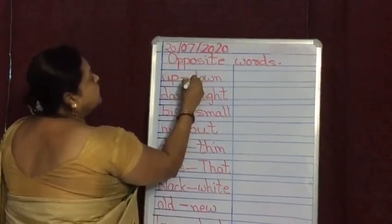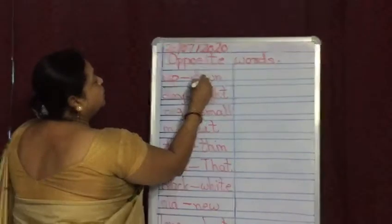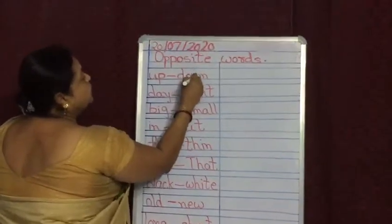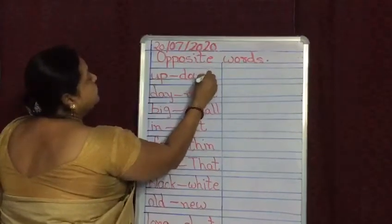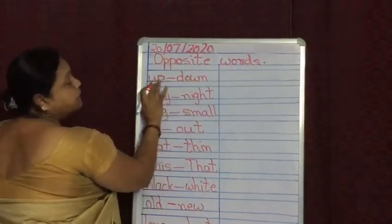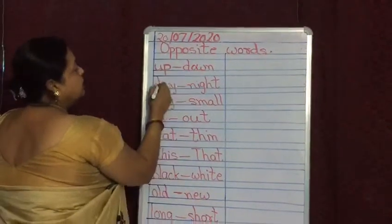D-O-W-N, down. Up means upar. Down means neeche.